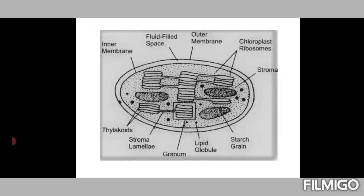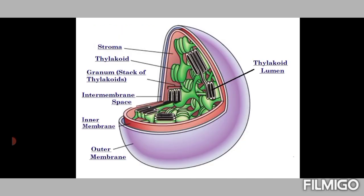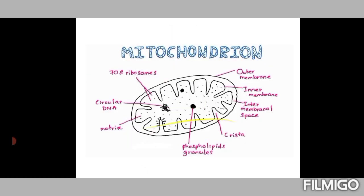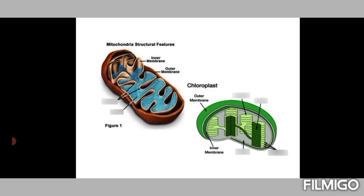The thylakoid lumen is very important and we will discuss more about its role in the synthesis of carbohydrates. For comparison, the mitochondrion and chloroplast structures can be seen side by side in the figures shown.